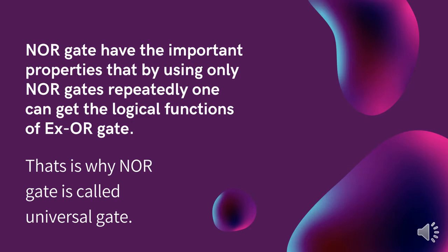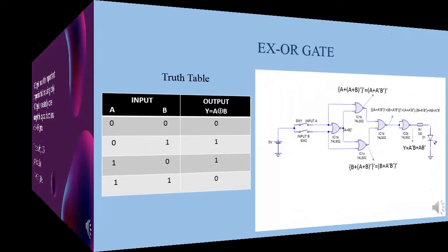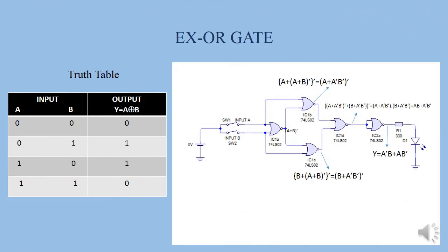By using the circuit implementation method, in the previous lecture we understood basic gate implementation. Today by using the circuit implementation method we can easily understand XOR gate implementation by using NOR chip only. This is the XOR gate circuit diagram by using NOR chip only.